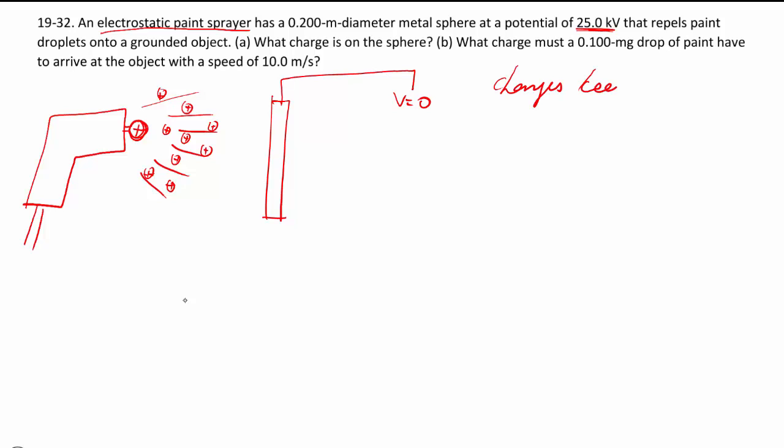So what you're essentially doing is two things. The charges keep the paint drops apart so they don't clump together, because each of the paint is positive and they keep each other away. So you don't get a big glob of paint that you're splashing onto your piece.